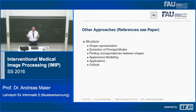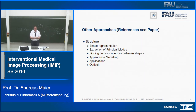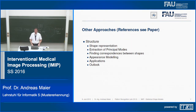In the end, both the appearance model and the shape model go into a joint search algorithm that allows us to find a specific shape in a specific volume. We will also discuss applications where this kind of modeling has been applied, and then look at the outlook. Let's talk about shape representation.